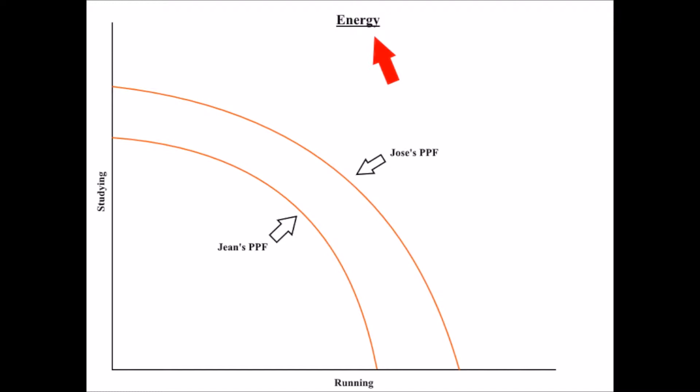Let's use this example. Jose can either use his energy to study microeconomics or to run. Right now, since Jose wants to be a track star, he is using 100% of his resources to run. Therefore, he is operating on the production possibilities frontier.